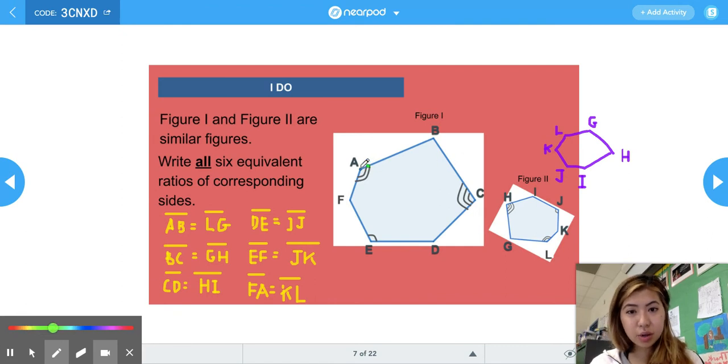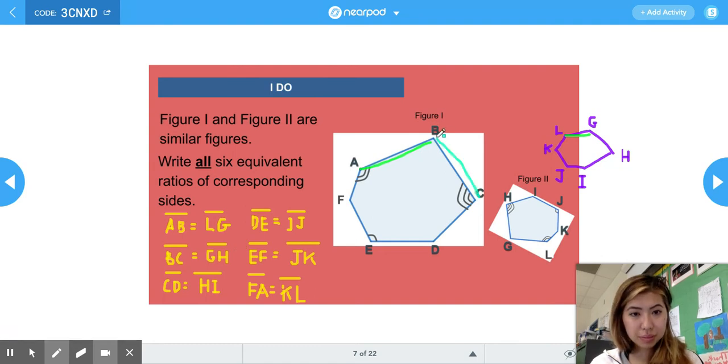So it's easier to see the corresponding sides when we draw or redraw the shape facing the same way.